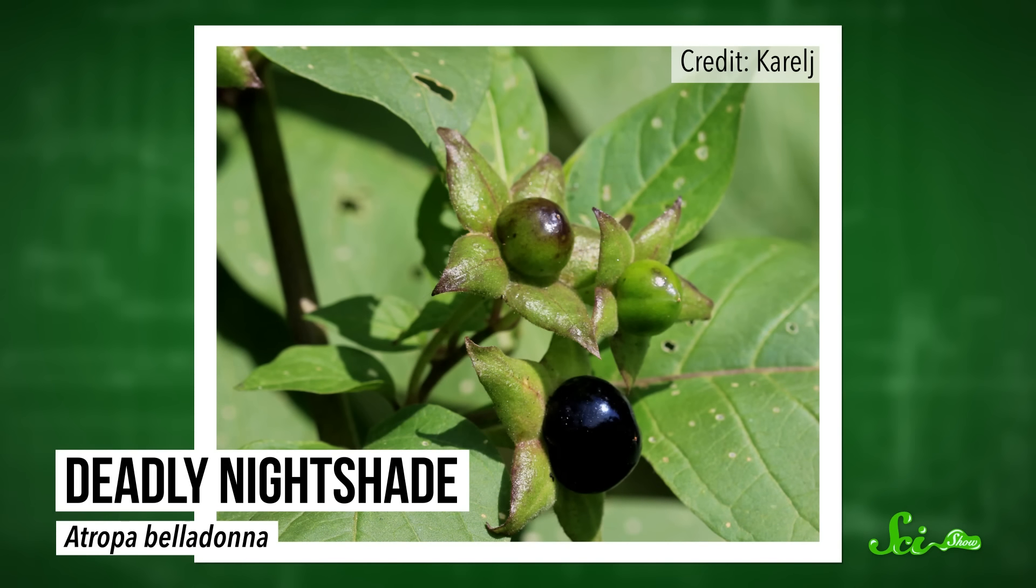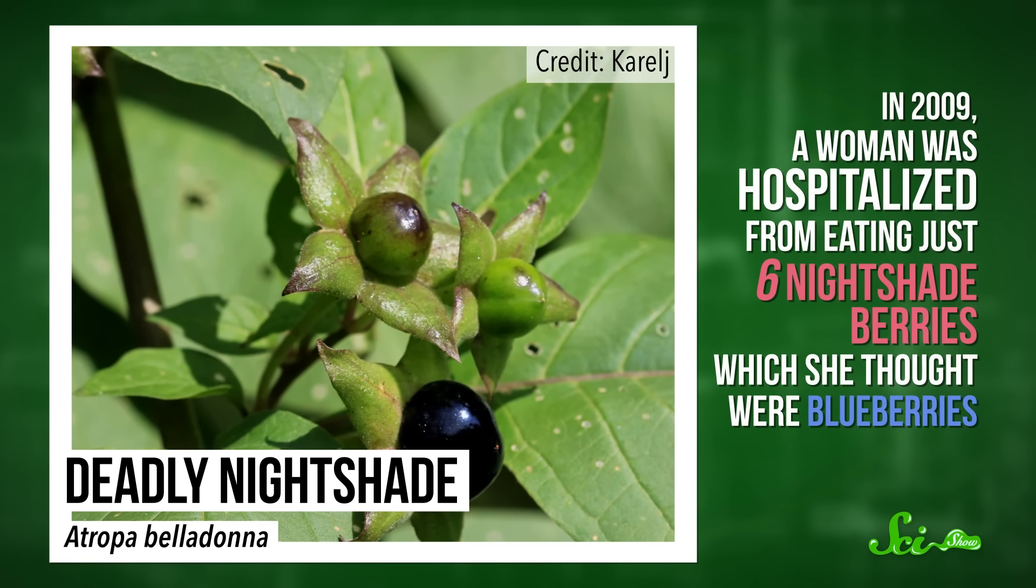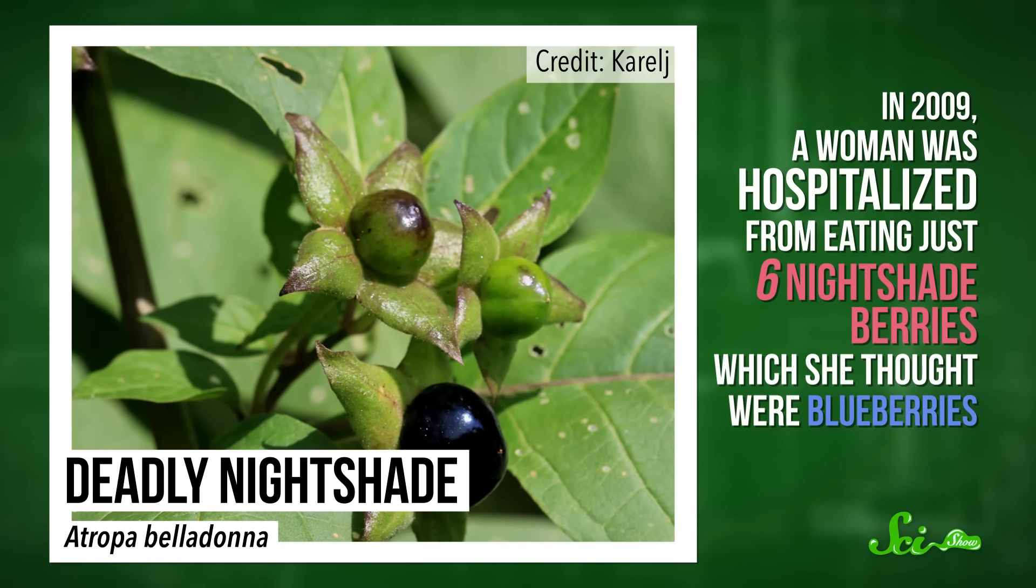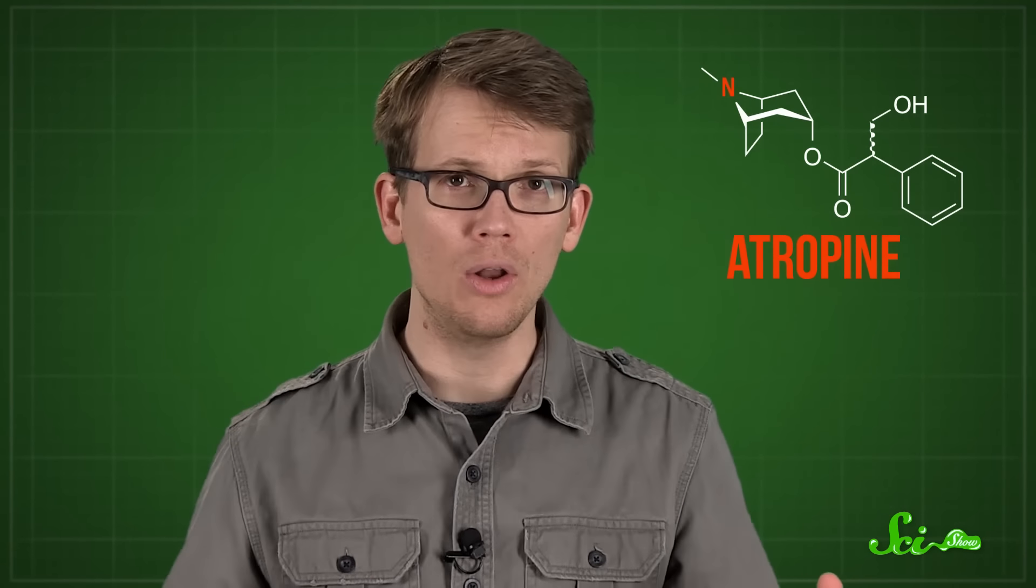Take the deadly nightshade, for example. In 2009, a woman was hospitalized from eating just six nightshade berries, which she thought were blueberries. Ten berries could have been fatal. One of the killer compounds in nightshade is atropine, an alkaloid found all over the plant. But atropine also has a good side.